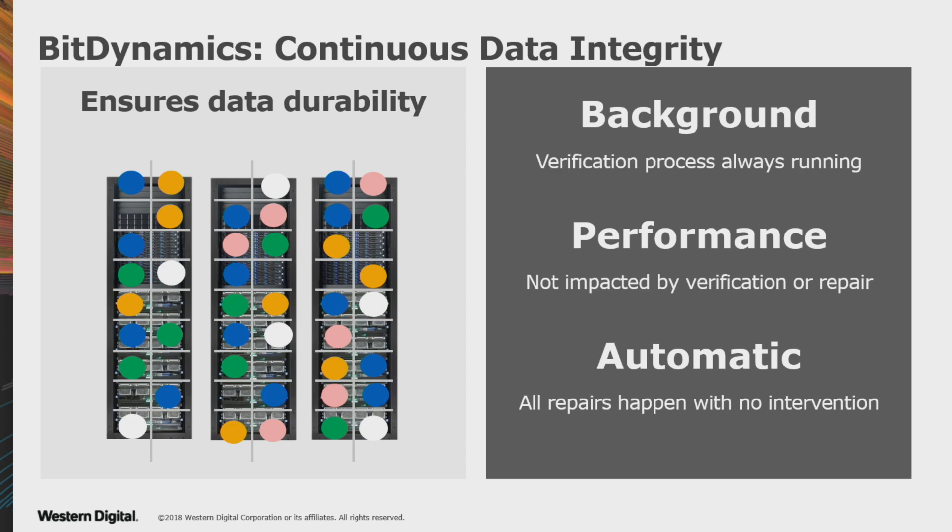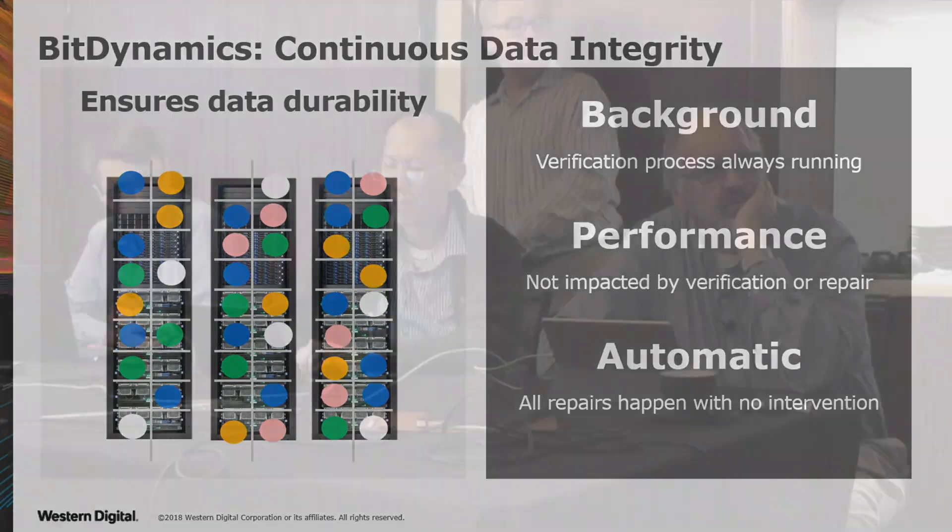The system would also do an erasure coding rebuild if it detected a problem on read or something like that — there are a number of system checks that go on. You have what I would consider end-to-end data protection: when an object is written, there's a checksum, and it's checked on write and verified on read. This is a strongly consistent system — we don't acknowledge the write until all of these bits have been written and verified. That's something that comes from AmpliData early on; that's how our systems have been designed from the beginning.